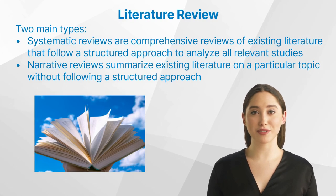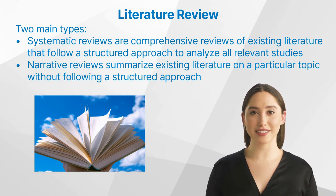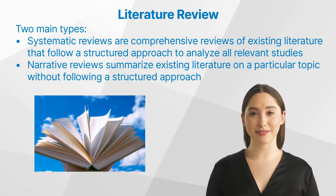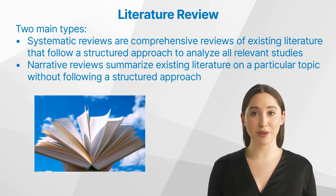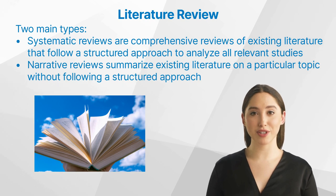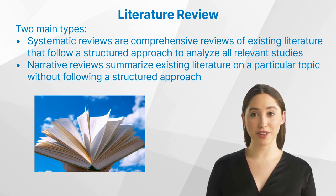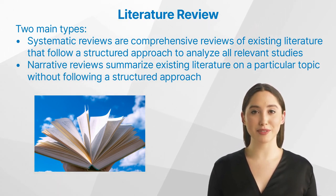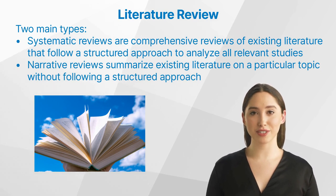There are two main types of literature reviews: systematic reviews and narrative reviews. Systematic reviews are comprehensive reviews of existing literature that follow a structured approach to identify and analyze all relevant studies. Narrative reviews summarize existing literature on a particular topic without following a structured approach. Besides these two, there are also other forms such as scoping review, rapid review, or integrative review. It is important to note that the boundaries between them may be blurred, and researchers may adapt or combine approaches to suit their specific research goals and context.